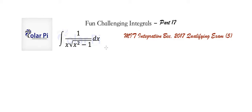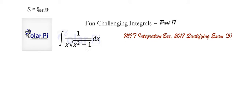Hey guys, part 17 here, so another fun integral, and this one is cited here. To get started, we need to make a substitution with x equal to sec theta. With this substitution, this here would become secant squared theta minus 1, which we know is tangent squared. So the quantity inside the square root will become tangent squared, and after we take the square root, it will just become tangent.